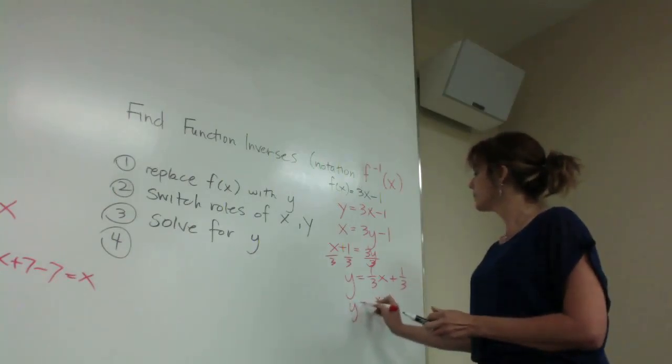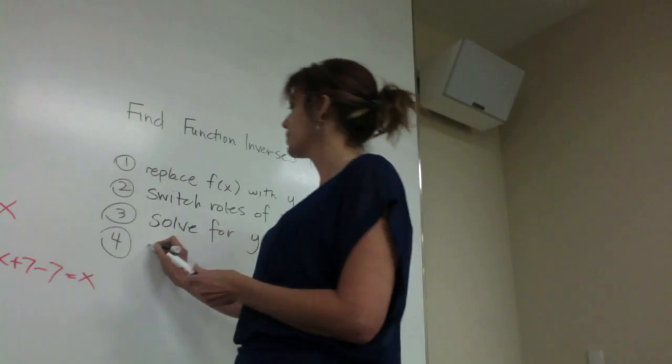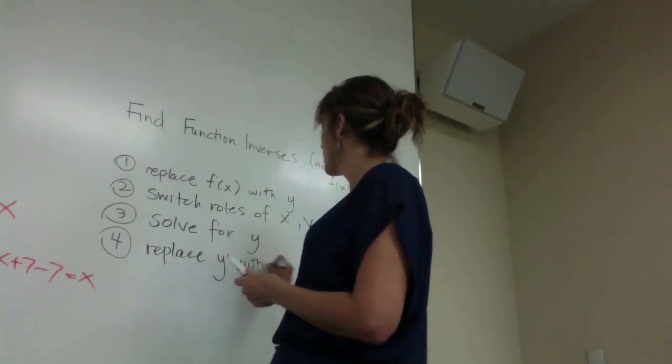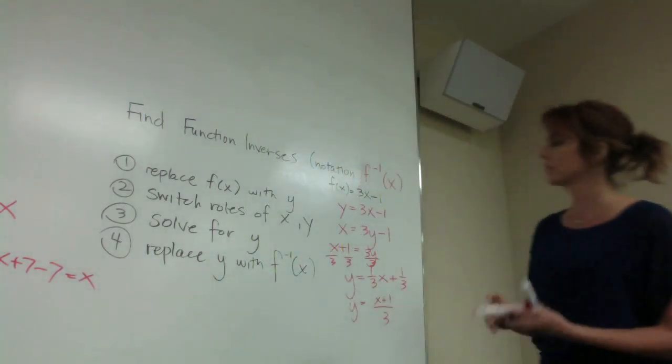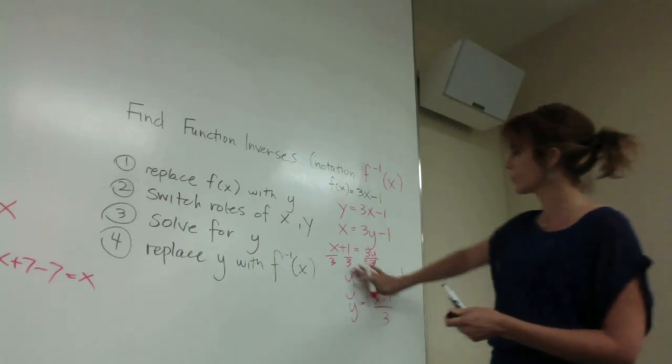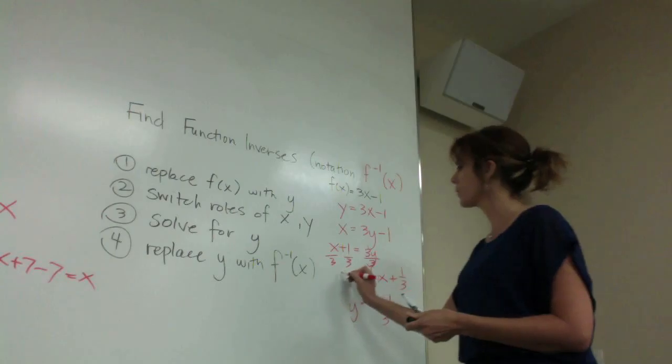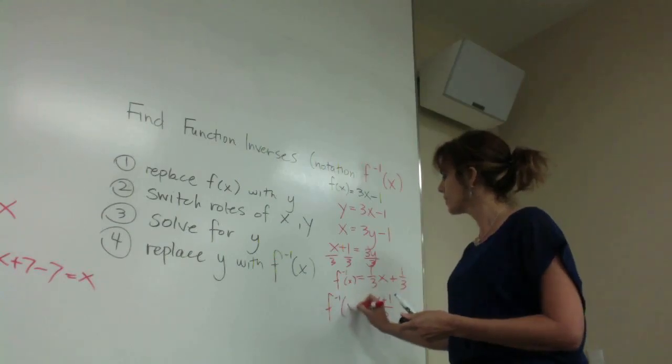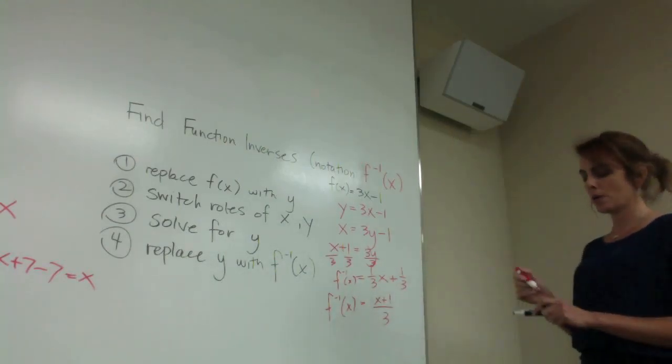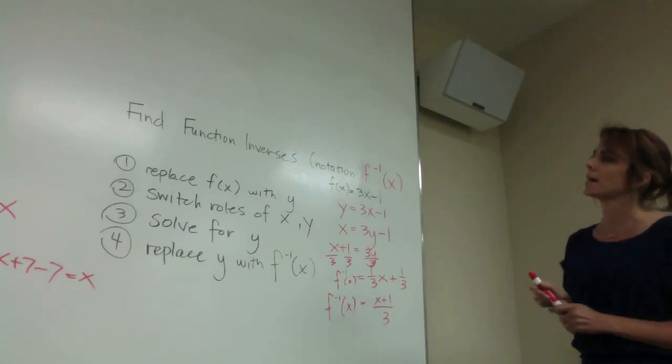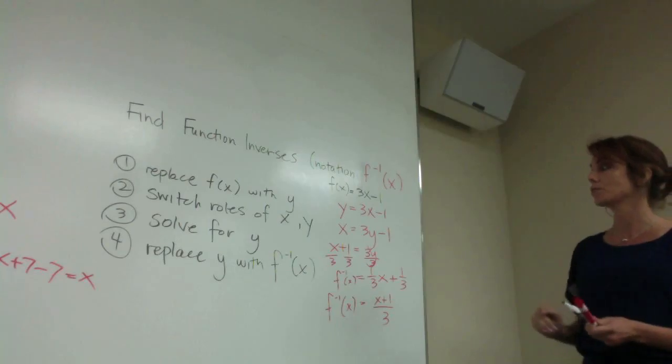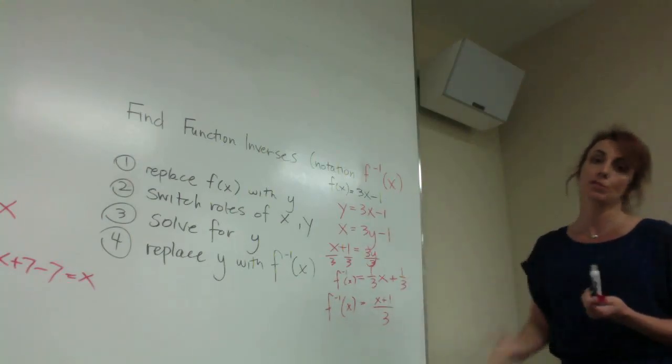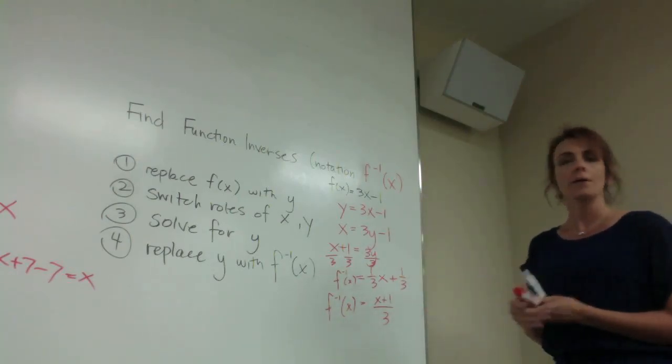And then the last thing we're going to do is replace y with f^(-1)(x). So at the end here, we're going to replace this y with f^(-1)(x). These are your main steps in finding the inverse of any function. Of course, you could go back and verify it by taking your inverse and your original and composing them, and you should end up back at x. See you in class tomorrow.